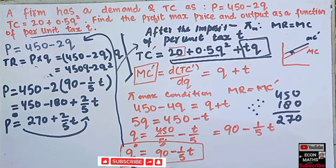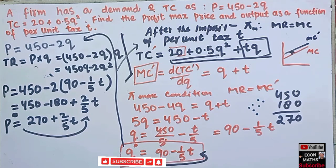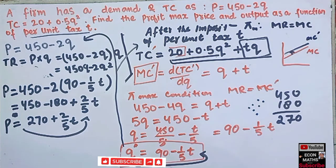So our profit-maximizing quantity is q* = 90 minus t/5 and our profit-maximizing price is p* = 270 + 2t/5 — both expressed as functions of per unit tax. I hope I've made myself clear in this video. Please share, subscribe, and like so that I get inspired to make more useful content. Thank you.